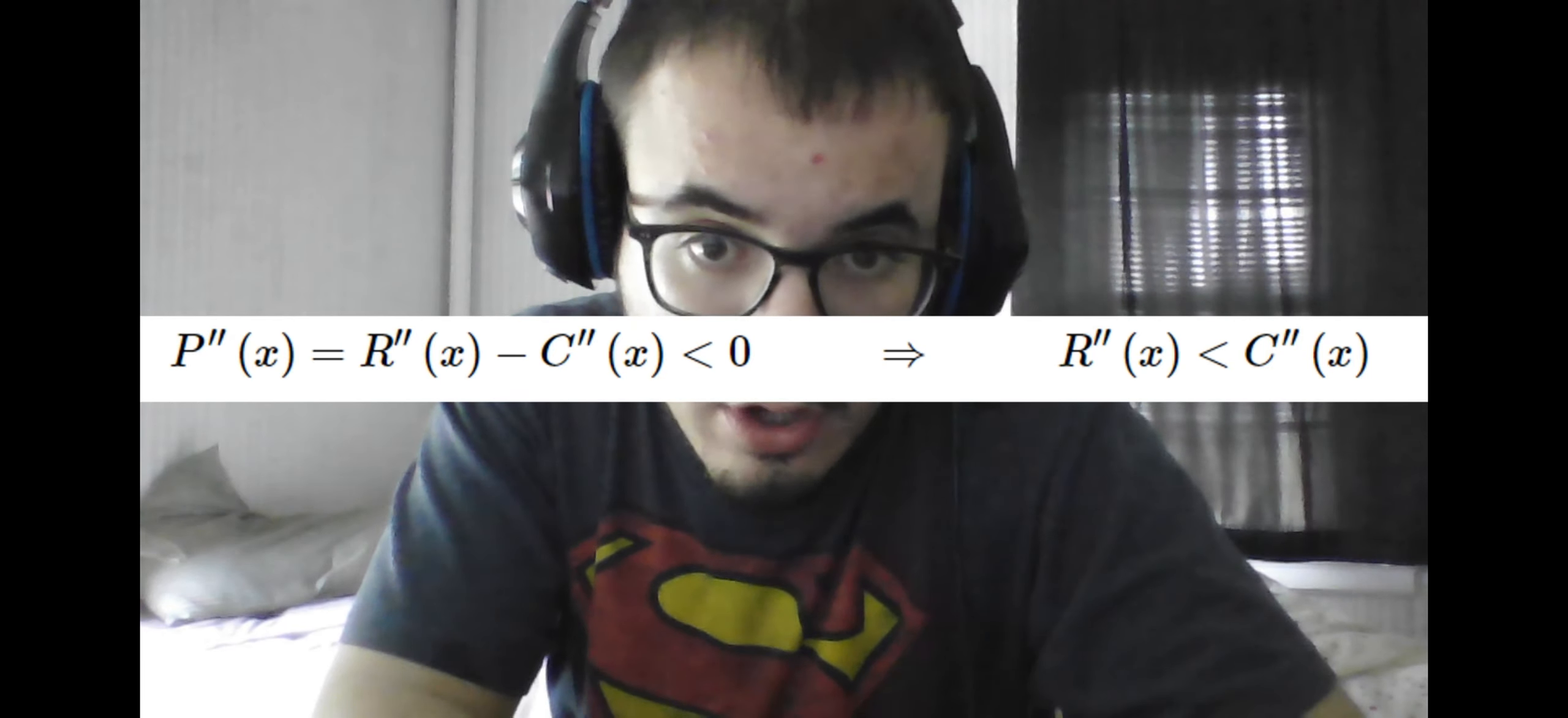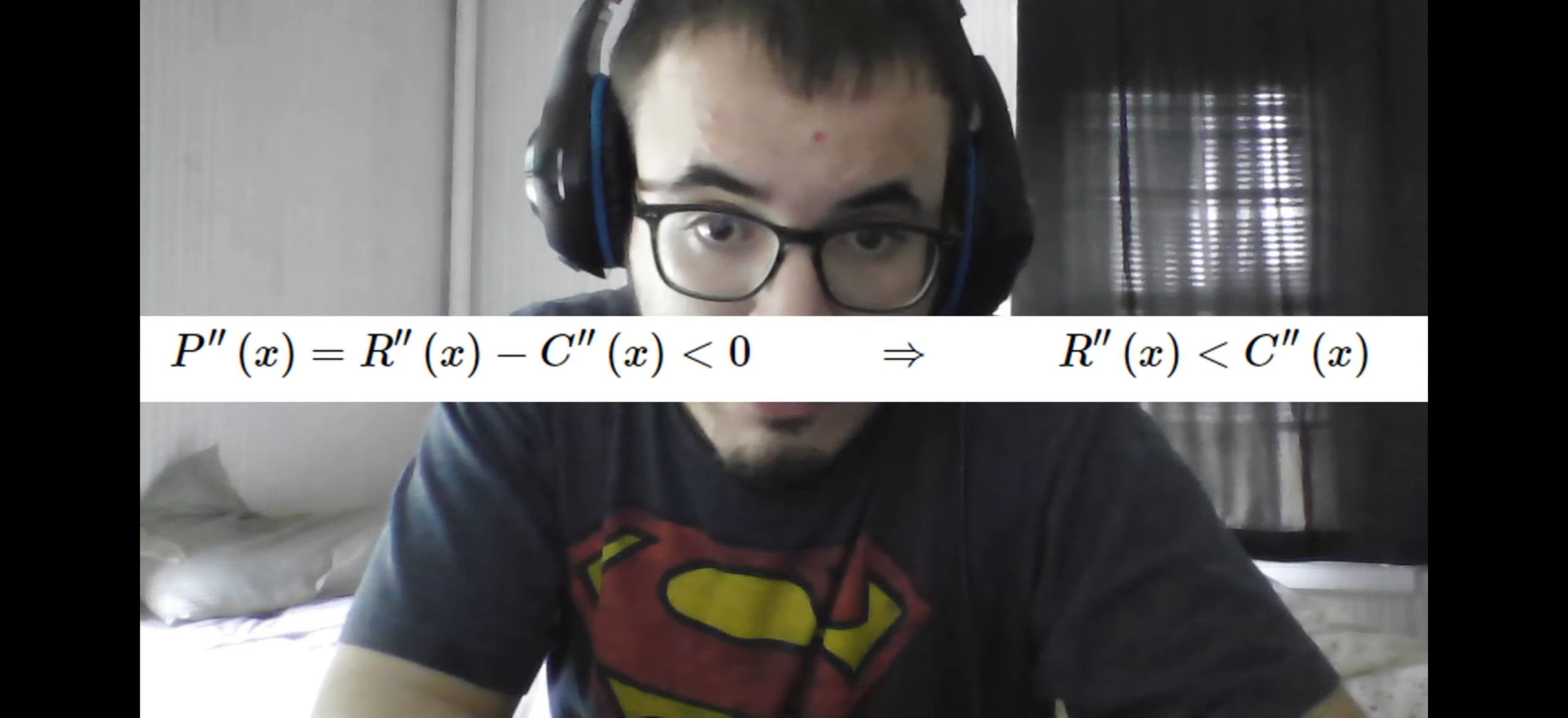...the second derivative of revenue must be less than the second derivative of cost, in order for the point to be maximum.